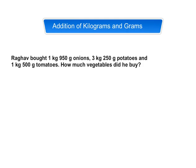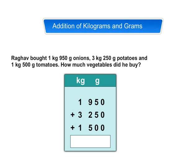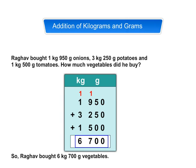Let us now solve a word problem on addition of weight. Raghav bought 1 kilogram 950 gram onions, 3 kilogram 250 gram potatoes and 1 kilogram 500 gram tomatoes. How many vegetables did he buy? Look at the solution. It's easy. Just regroup and add. So, Raghav bought 6 kilogram 700 gram vegetables.